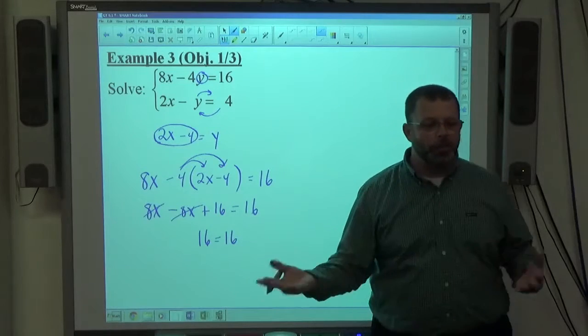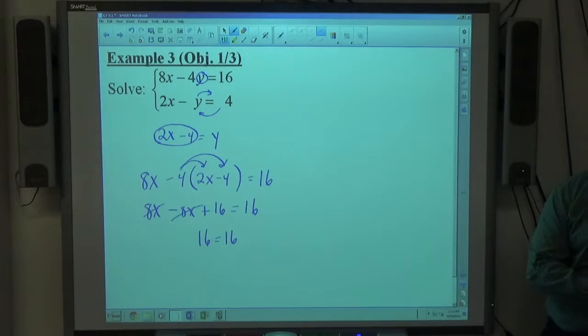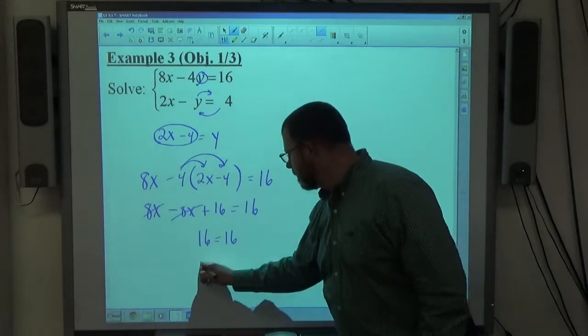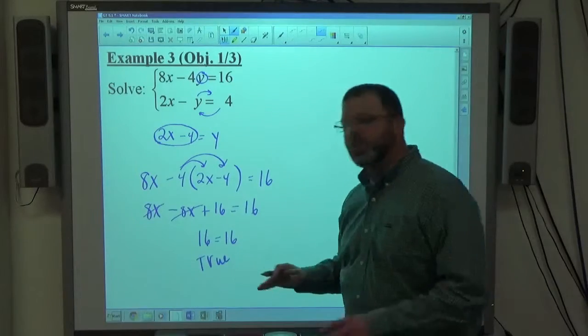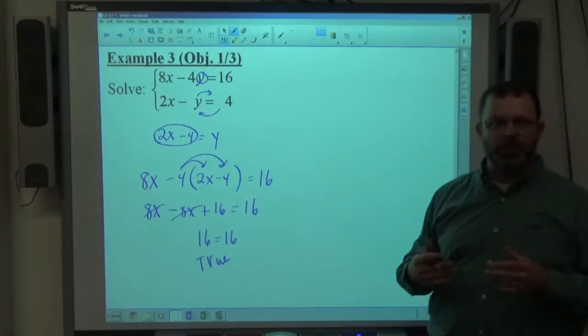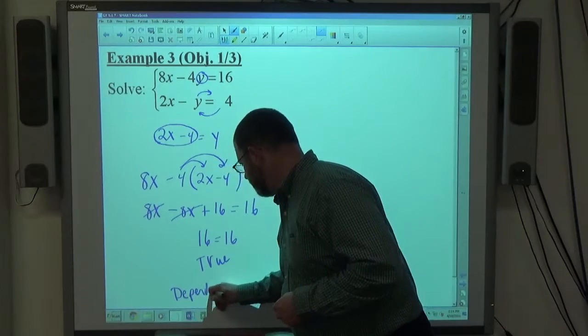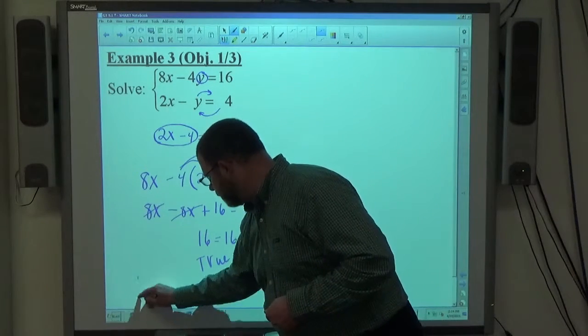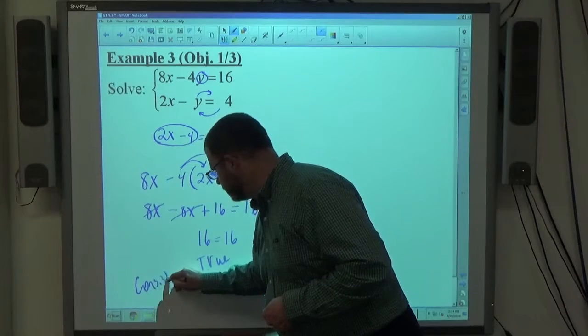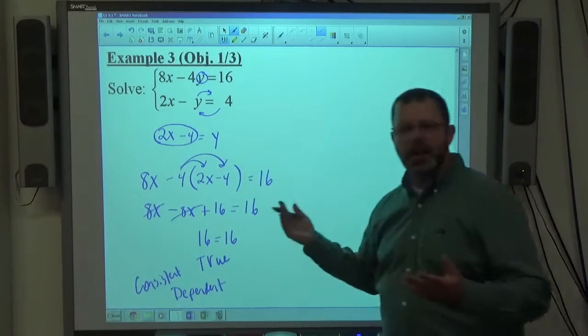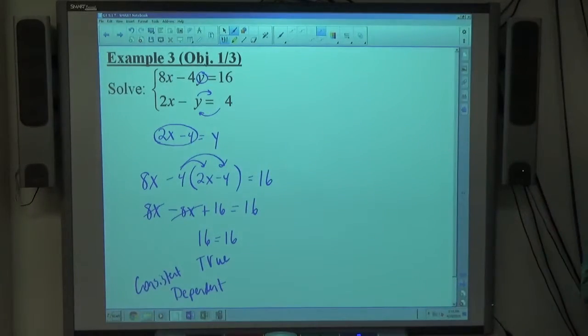All the variables disappeared, and the resulting expression is now either true or false, numerically true or false. 16 equals 16 is true. So as far as the type of system it is, it's a consistent dependent. If they ask you to identify what type of system it is, it's a consistent dependent system of equations.